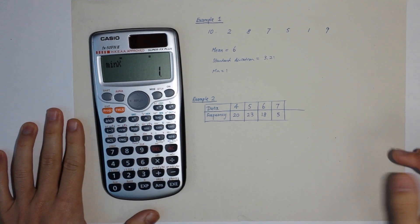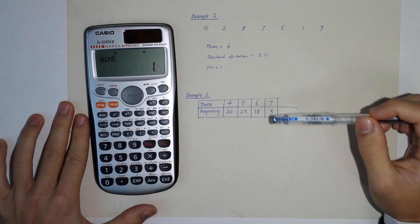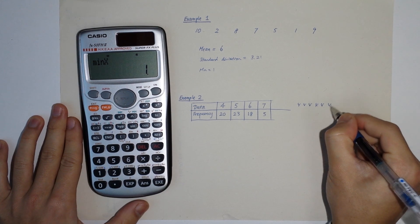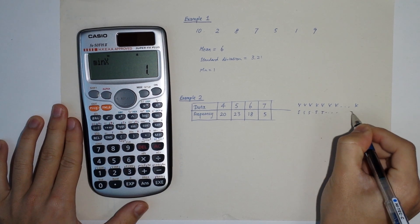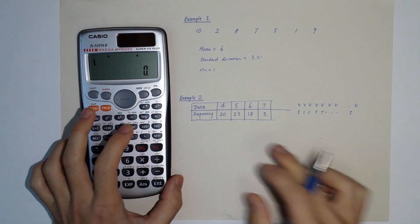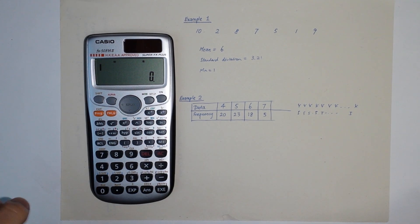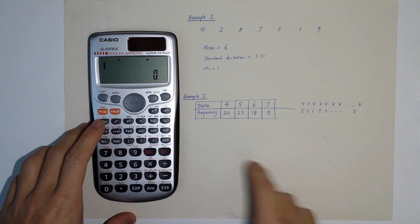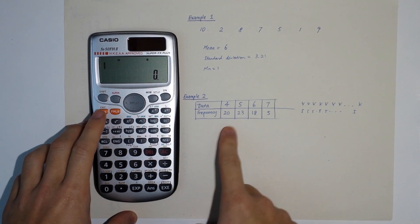For Example 2, the case is quite similar but this time you see a data column with frequencies. This means the data is actually 4 repeated many times, then 5 repeated many times, and so on. Entering each value one by one with M+ would not be efficient.